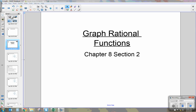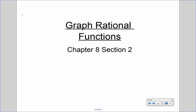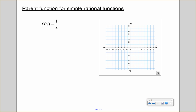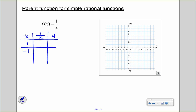Today I'm going to be talking about graphing rational functions — Chapter 8, Section 2. First, let's look at the parent function of a rational function and do a table of values. I'm going to pick 1 and negative 1. I cannot pick 0 because if we plug in 0 for x, it's going to be undefined, so x cannot equal 0.